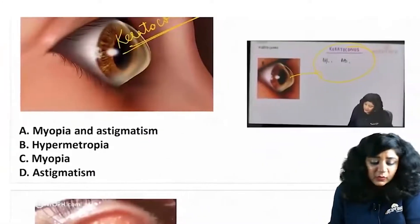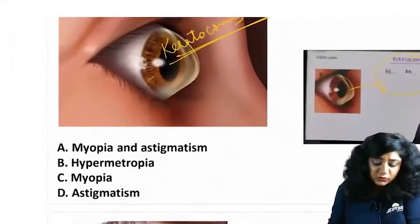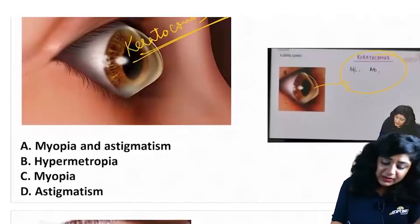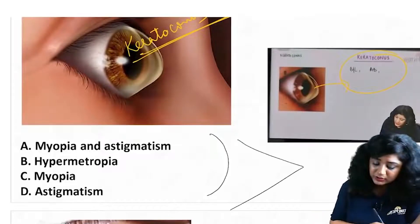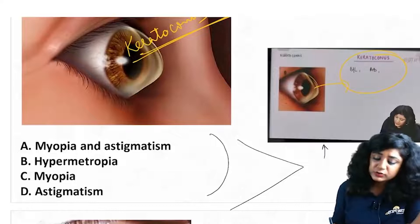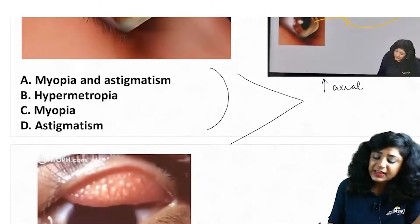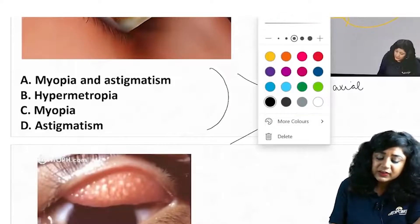What is the refractive error that we are going to have in cases of keratoconus? When I am talking about keratoconus, instead of this cornea, I'm having this cornea. So there is an increase in the axial length of the eyeball, that is very very clear.